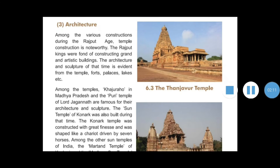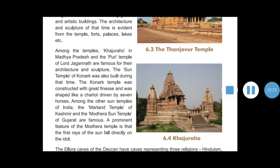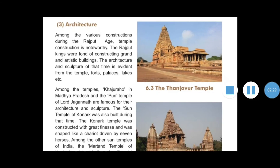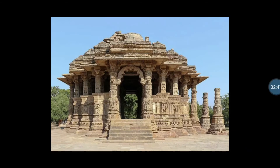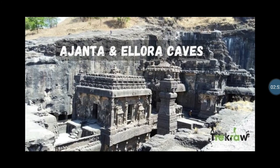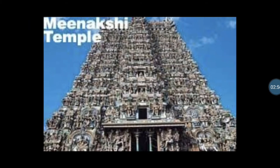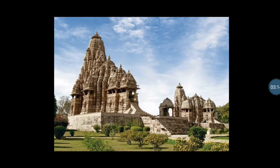Among the temples, Khajuraho in Madhya Pradesh and the Puri temple of Lord Jagannath are famous for their architecture and sculpture. Here pictures are given. You can see the picture of the Tanjavar temple. The Sun Temple was also part of Rajput-age architecture. Ajanta-Ellora caves and the Meenakshi temple were all constructed during this period — the Rajput kings were very fond of making these temples and buildings.